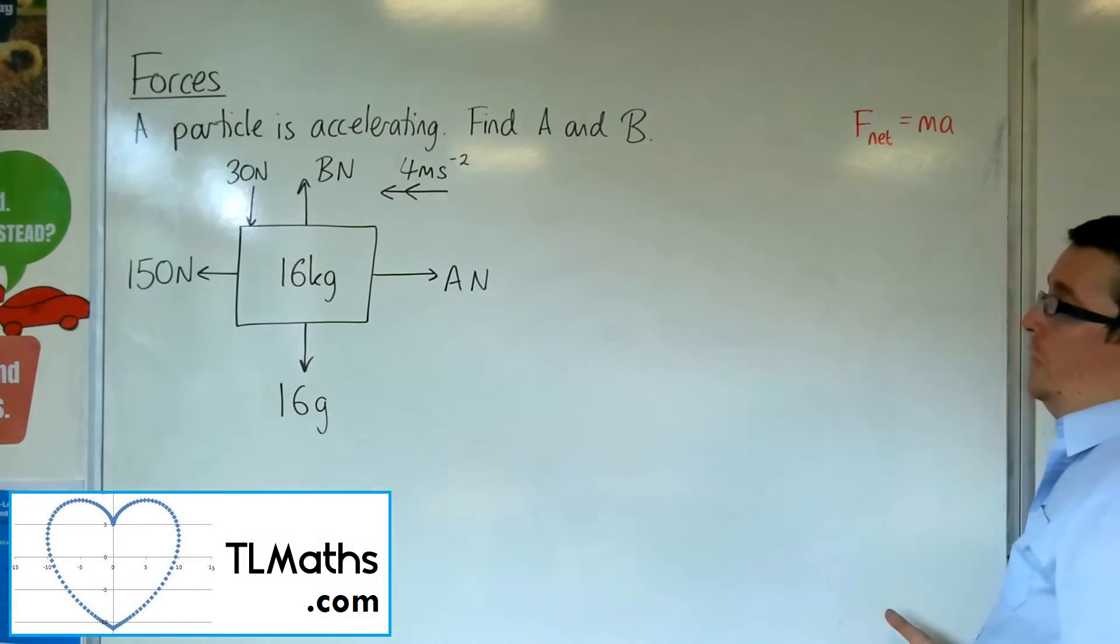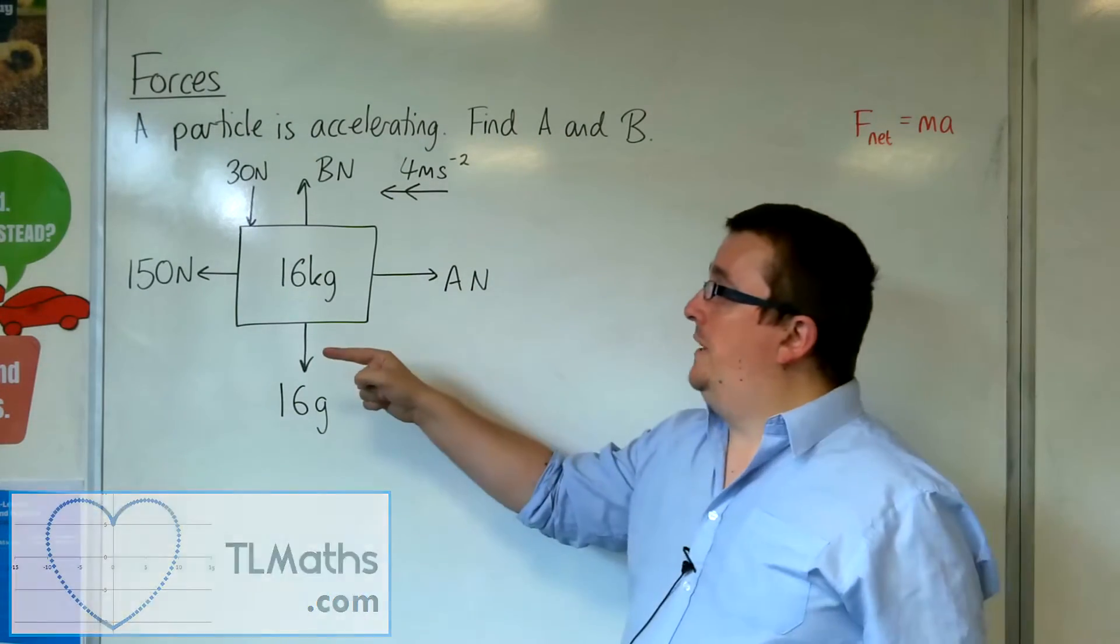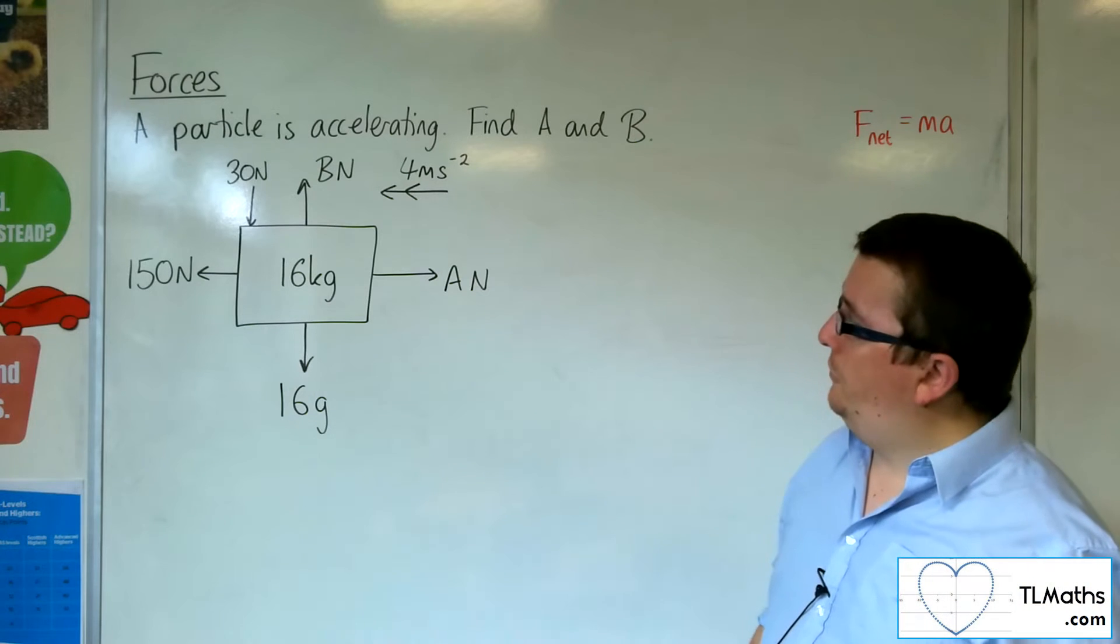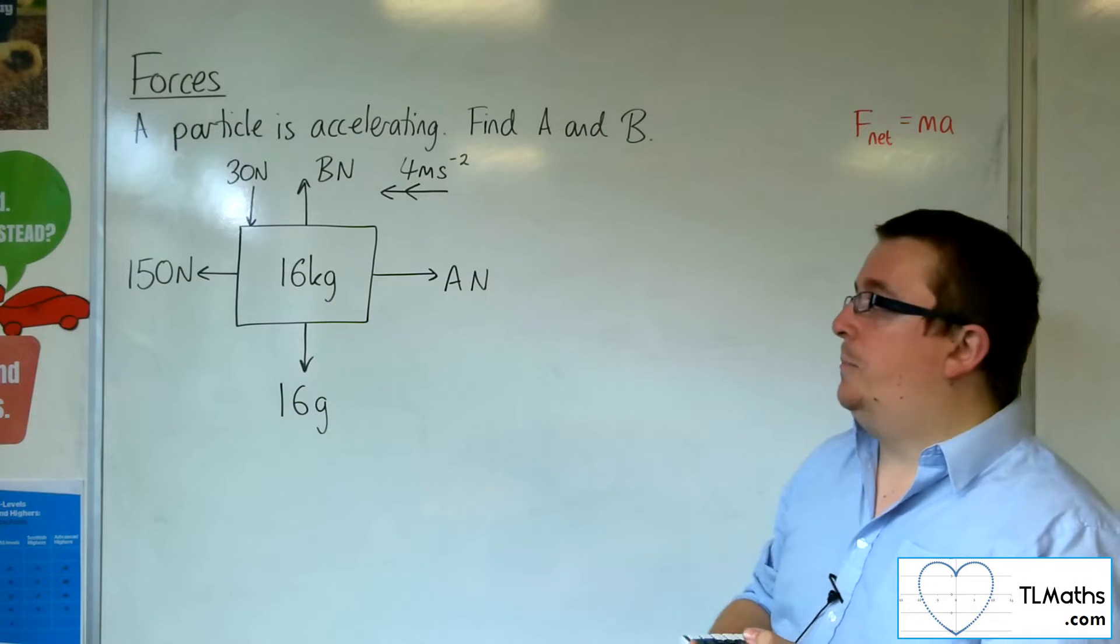So in this problem, we've got a particle accelerating, this time 4 metres per second per second to the left, and we need to find A and B.